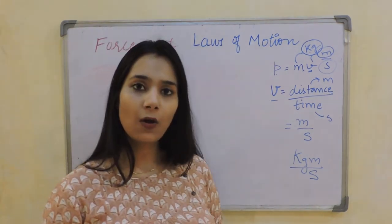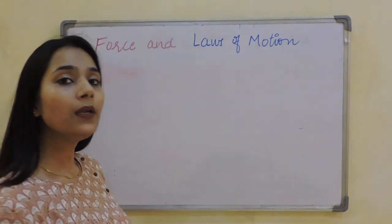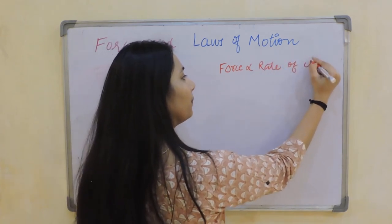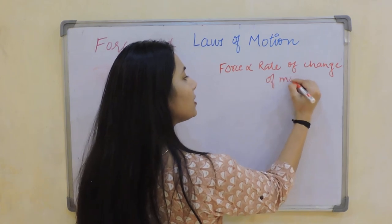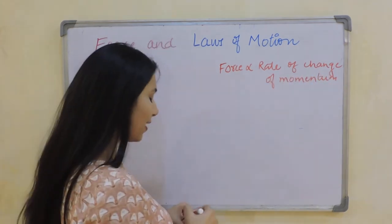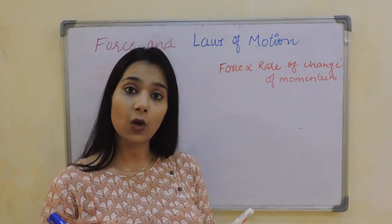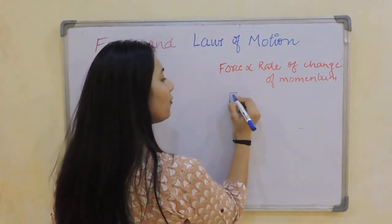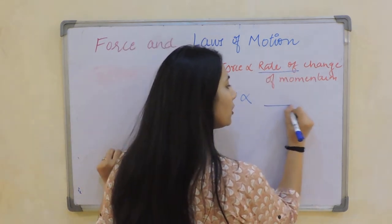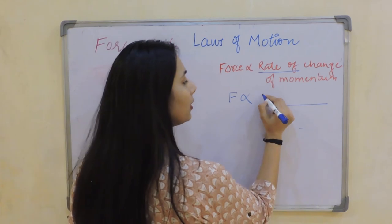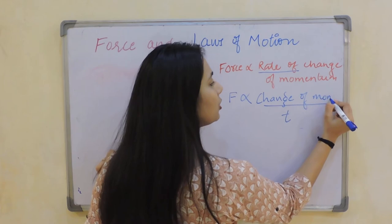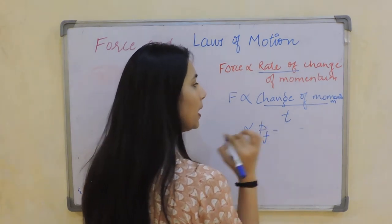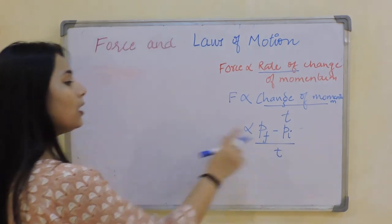Now, according to the second law of motion, force is directly proportional to the rate of change of momentum. 'Rate of' means divided by time. So F ∝ ΔP/t, where the change in momentum is final momentum (PF) minus initial momentum (PI), divided by time t.